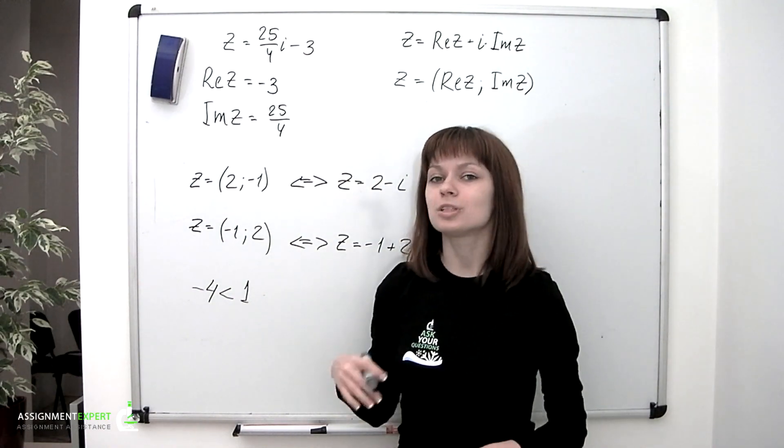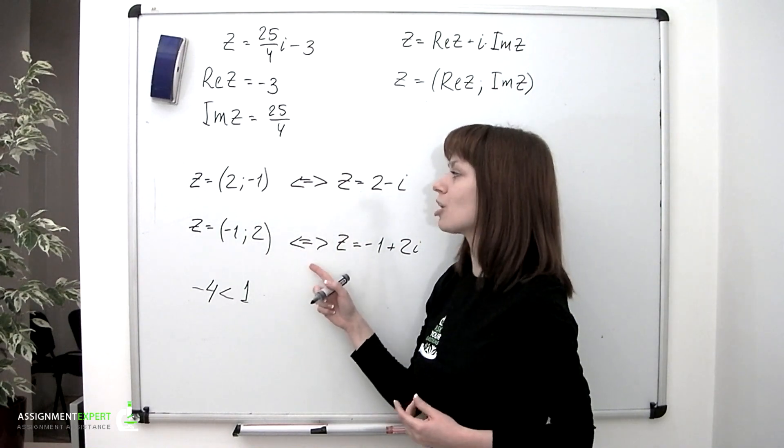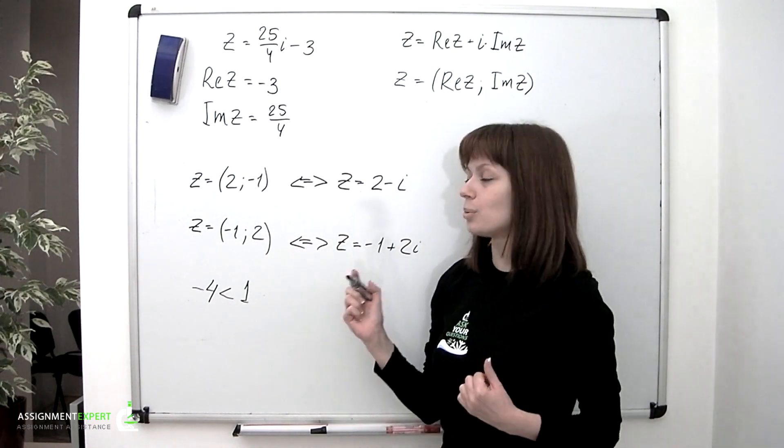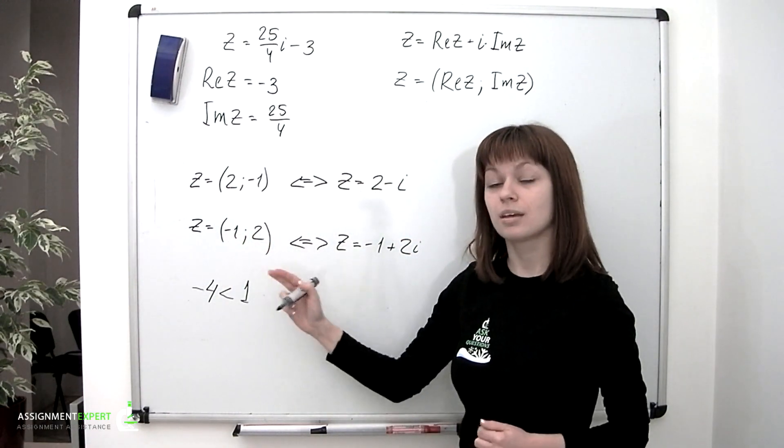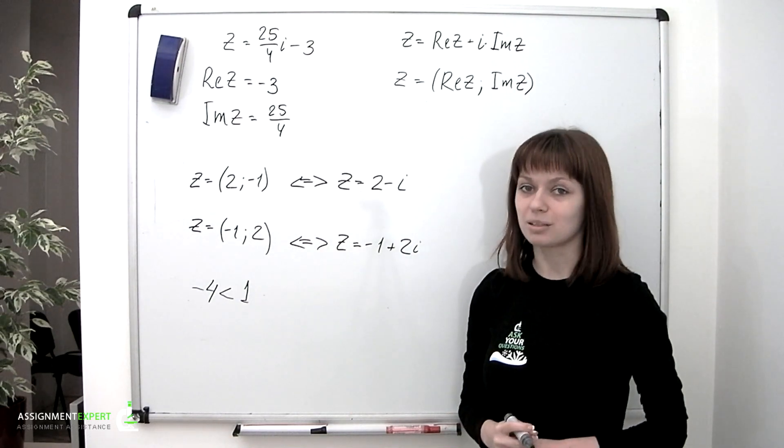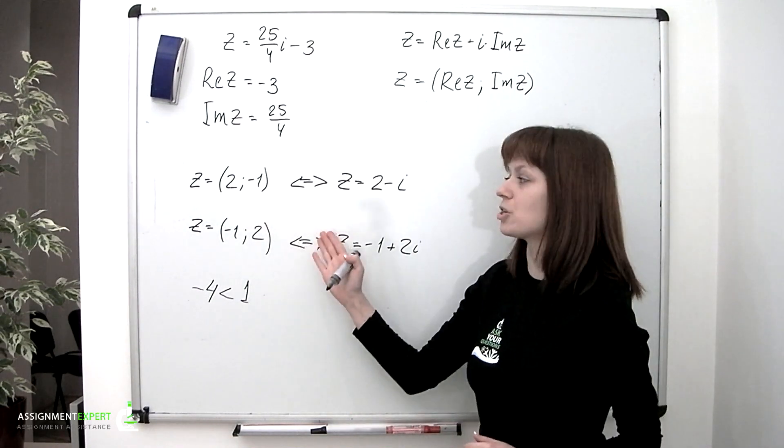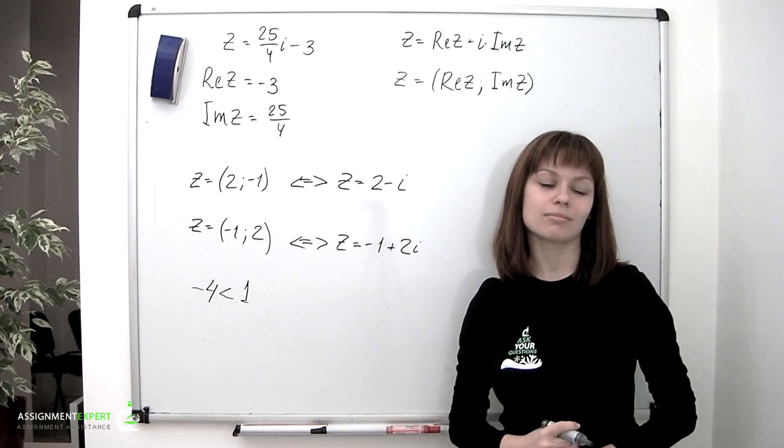Complex numbers cannot be put in any sort of order, and therefore we cannot say which of two complex numbers is less or greater than the other one. We can only say that they have this much of real part and this much of imaginary. However, two complex numbers can be equal. That happens if and only if their real and imaginary parts are correspondingly equal.